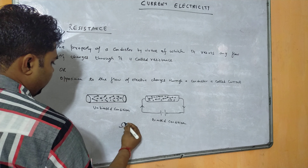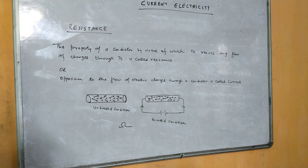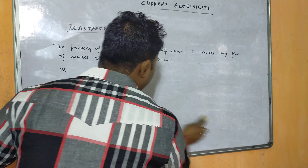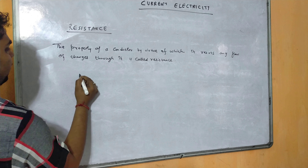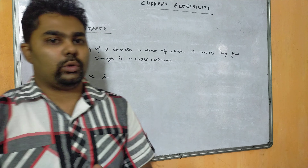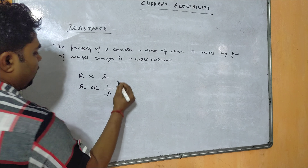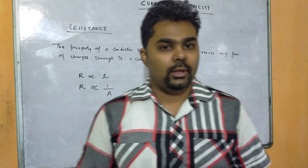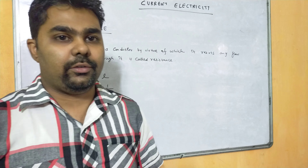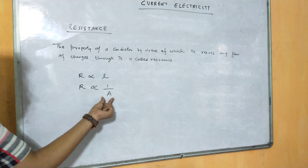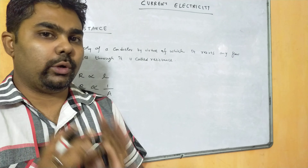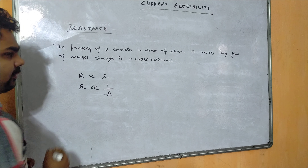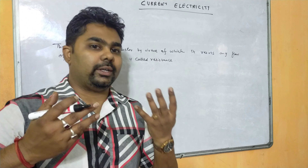The resistance of any conductor depends upon several factors. Resistance is directly proportional to length — if the length is more, resistance is more. Resistance is inversely proportional to area of cross-section — if the wire is thin, resistance is more; if thick, resistance is less. That is why transmission lines use thick wire: greater area of cross-section means less resistance and more electric current.